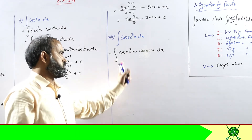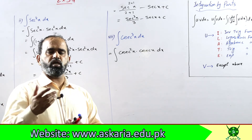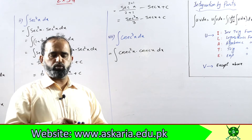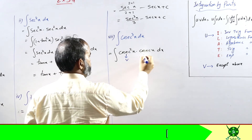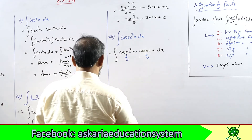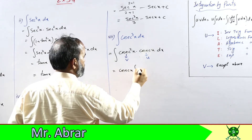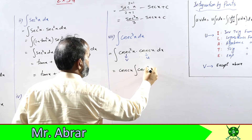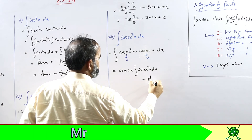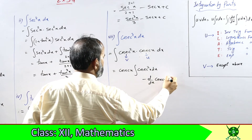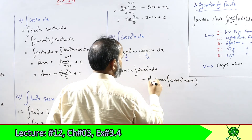देखते हैं कि कोई function ऐसा है जो किसी का derivative है। cot का derivative होता है minus cosec²(x) - minus का कोई issue नहीं, क्योंके derivative है तो इसको v के तौर पे लेके चलेंगे और cosec(x) को u के तौर पे। तो u as it is, cosec²(x) की integration, minus derivative of cosec(x), integration cosec²(x) dx, whole integration।